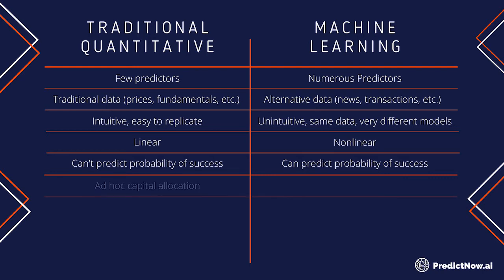Traditional quant models have fairly arbitrary capital allocation, typically based on the volatility of the position — things such as average true range, historical volatility, mean-variance portfolio optimization, or correlation with other strategies. It's still fairly arbitrary because it is similar to average statistics — it doesn't take into account your current situation. It tells you that on average, in the past 10 years, you should allocate this much capital. But machine learning produces a probability every day — maybe even every minute — and you can use that dynamic probability to assign capital based on the current situation in the market, economy, or world as a whole.